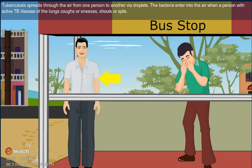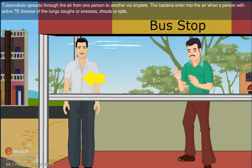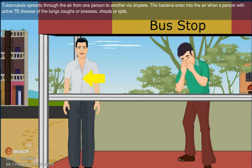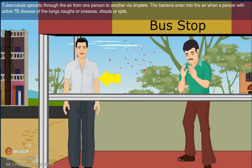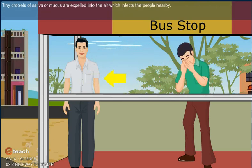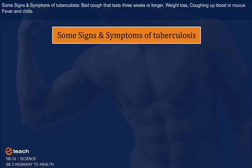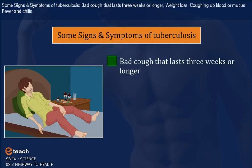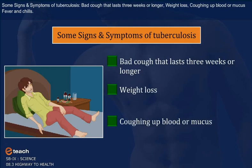Tuberculosis spreads through the air from one person to another via droplets. The bacteria enter the air when a person with active TB disease of the lungs coughs or sneezes, shouts or spits. Tiny droplets of saliva or mucus are expelled into the air which infects the people nearby.